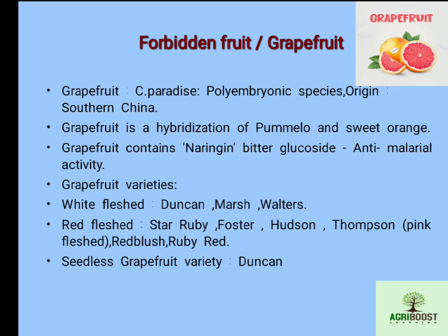Important grapefruit varieties: white flesh varieties are Duncan, Marsh, and Walter — Duncan is also a seedless variety. Red flesh varieties include Star Ruby, Foster, Hudson, Red Ruby, and Red Flesh. Thompson is a pink flesh variety of grapefruit.